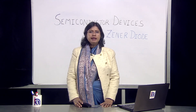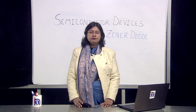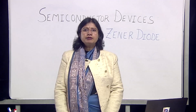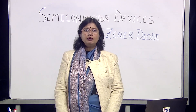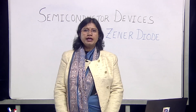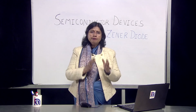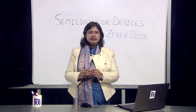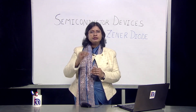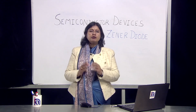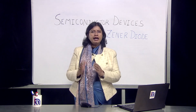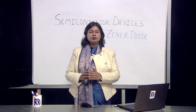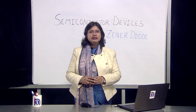This gives the Zener diode immense applications as a voltage stabilizer. In this topic we have learnt about the working of the Zener diode as a voltage stabilizer or voltage regulator. The input from the rectifier is filtered via an LC circuit, and that filtered output with ripples is further regulated via the Zener diode, ultimately giving a stable output. Thank you learners.